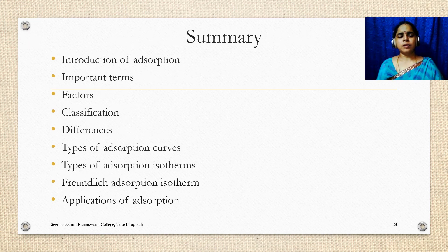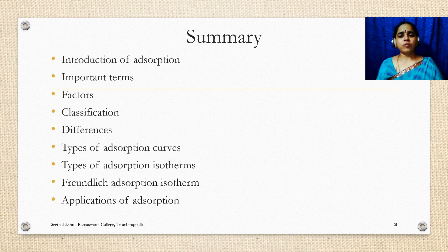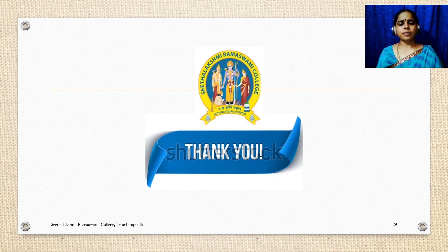In summary, this session covered: introduction to adsorption — adsorption is an exothermic and spontaneous process; important terms including adsorbate, adsorbent, sorption, occlusion; factors affecting adsorption; classification of adsorption into physisorption and chemisorption and the differences between them; types of adsorption curves; types of adsorption isotherms; the Freundlich adsorption isotherm; and the applications of adsorption.